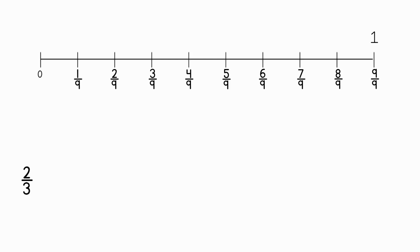Let's try another. In this problem we want to plot the fraction two thirds on this number line that is marked in ninths. So, we need to find an equivalent fraction to two thirds that has a denominator of nine. What can you multiply three by to get nine?